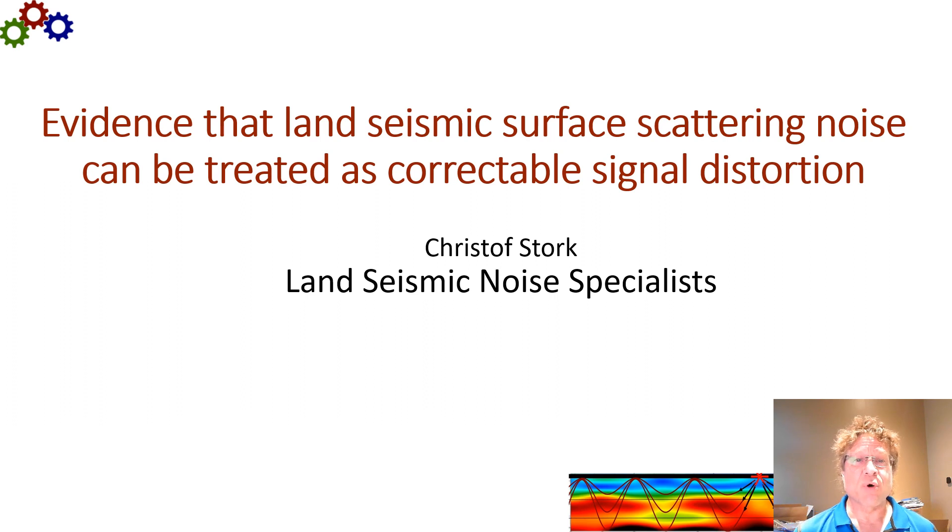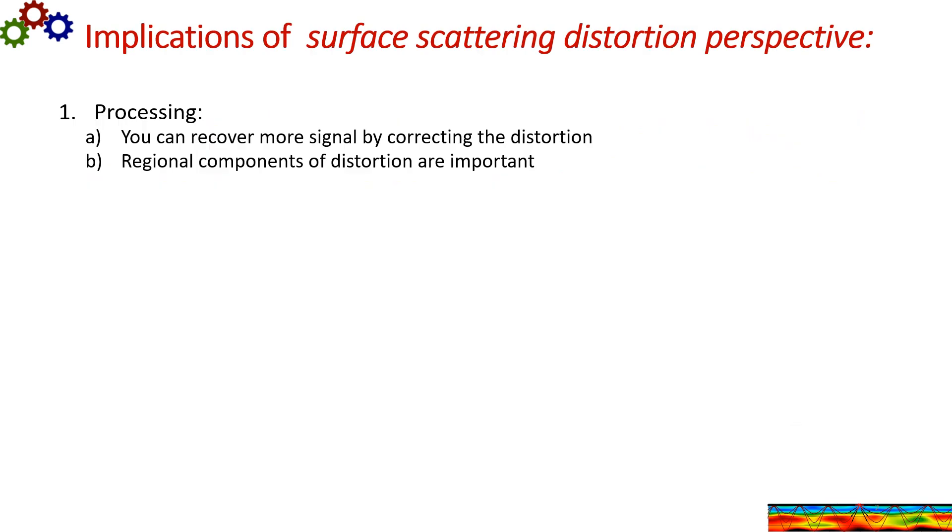There are a number of important implications of this perspective. The implications affect processing, acquisition and interpretation. In processing, you can recover more signal by correcting the distortion. In acquisition, dense acquisition won't entirely remove the noise on its own. Dense acquisition also won't solve the distortion problem because you just record more distorted signal. Surface noise characteristics can change a lot over a small scale. And this has interesting implications if you can use LIDAR to predict the noise.